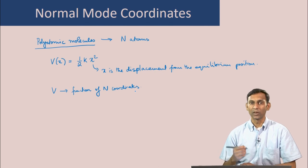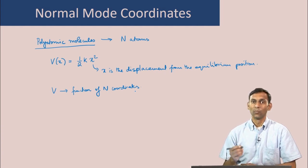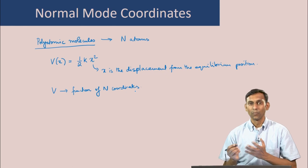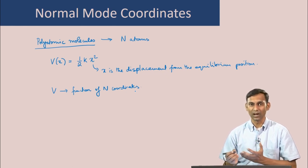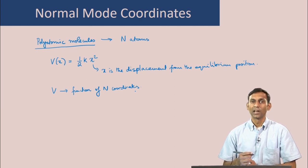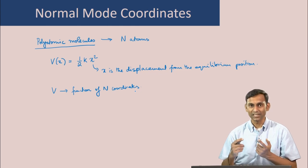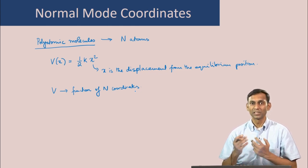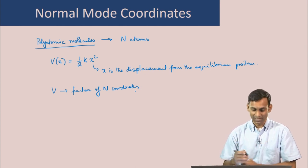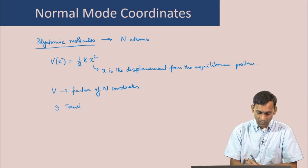In a similar way, for a polyatomic molecule with n atoms, we can show that the motion of these n atoms can be decomposed into 3 motions associated with the center of mass moving in the x, y, and z directions, and 3 other motions associated with the molecule overall rotating along the x, y, and z axes. Besides these 6 overall motions, there are 3n − 6 internal or vibrational motions. So: 3 translations, 3 rotations, and 3n − 6 vibrational motions.